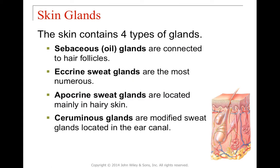There are four types of glands in the skin. The sebaceous gland is an oil gland connected to hair follicles — responsible for the greasy appearance of hair after days without washing. Eccrine sweat glands are the most numerous. Apocrine sweat glands are mainly located in hairier skin regions like the armpits. Ceruminous glands are specialized sweat glands found only in the ear canal, secreting a substance that becomes earwax.